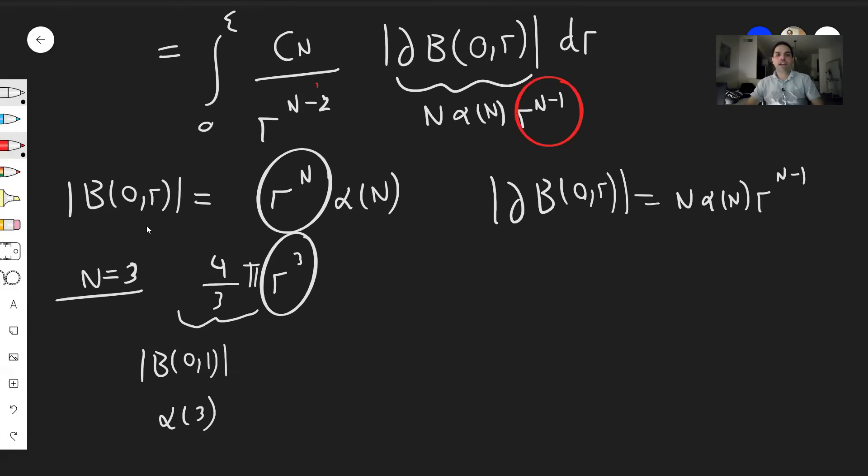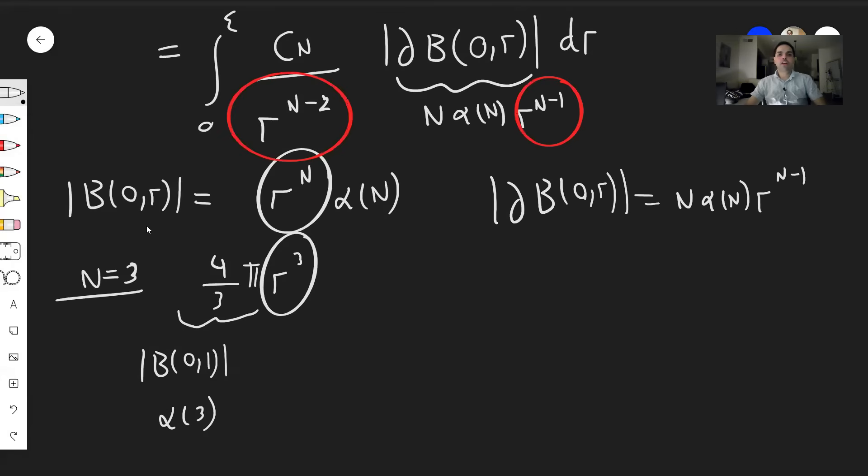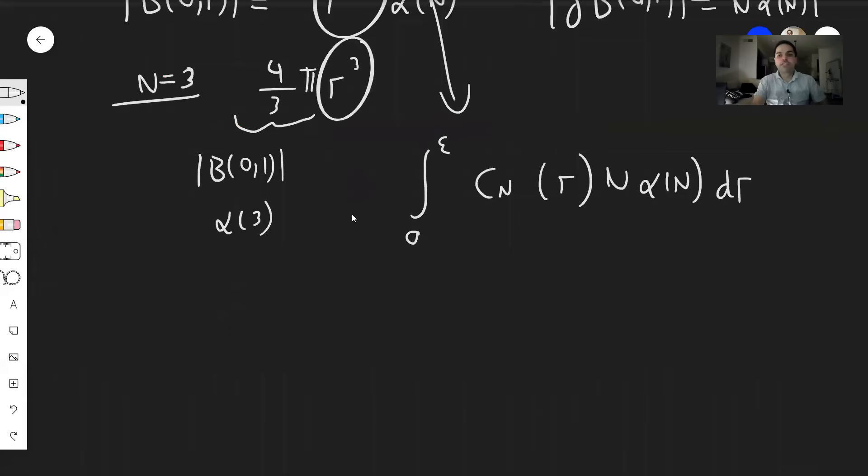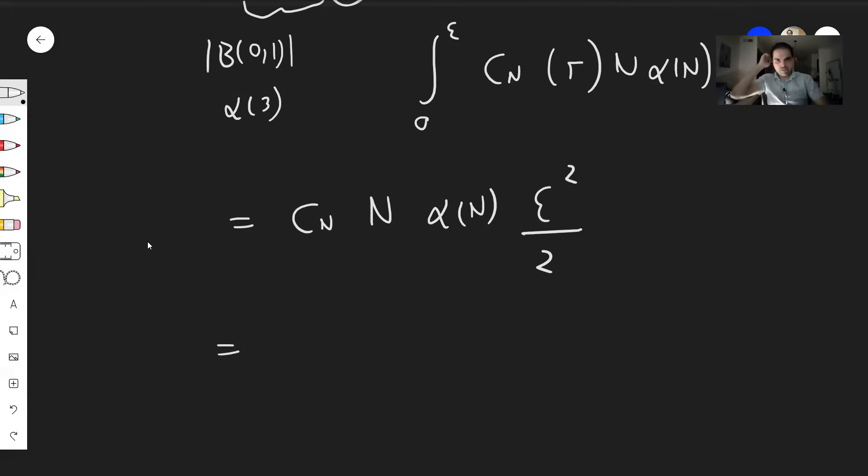So this becomes R^(N-1) over R^(N-2). And what this simplifies to integral from zero to epsilon, you have the C_N, you have R^(N-1) over R^(N-2), which is R, and you still have N α_N dr, but then everything is a constant except for R. So it becomes C_N, and literally C_N, N α_N, and an antiderivative of this is R² over 2. So ε² over 2.